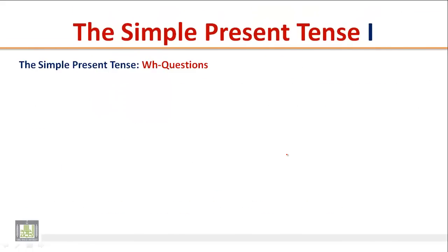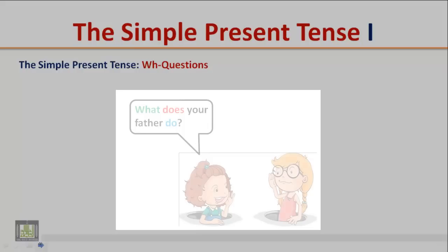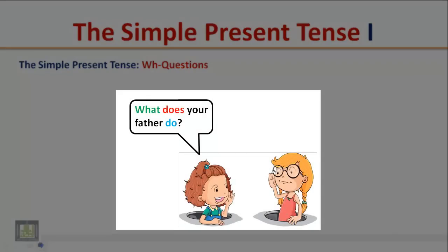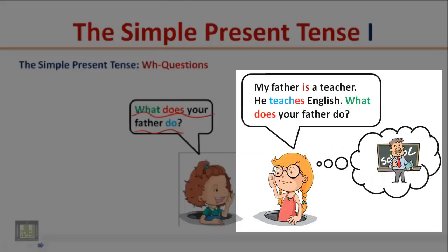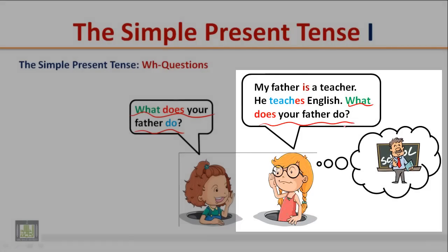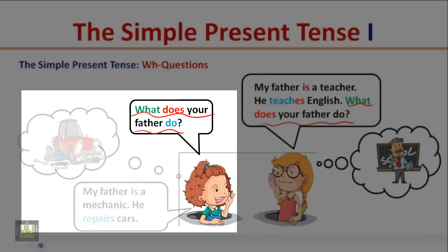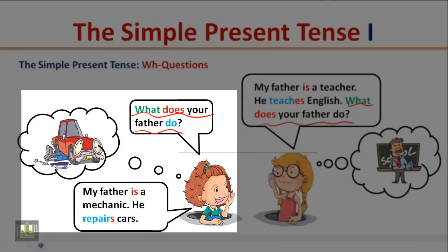The Simple Present Tense: WH Questions. Listen to the following short conversation and pay attention to the word order. 'What does your father do?' 'My father is a teacher. He teaches English.' 'What does your father do?' 'My father is a mechanic. He repairs cars.'